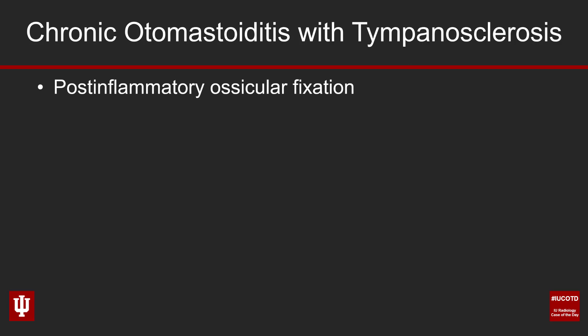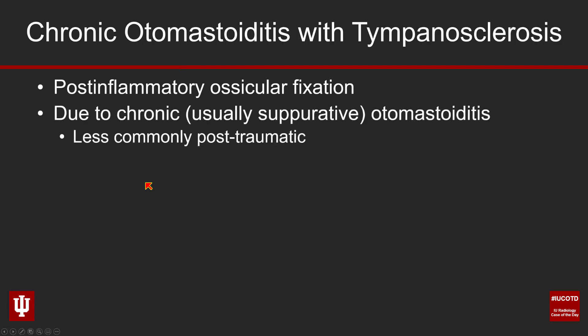This patient has chronic otomastoiditis with tympanosclerosis on the right. What is tympanosclerosis? I tend to lump all the imaging manifestations under the broad category of post-inflammatory ossicular fixation. This is due to chronic — usually suppurative — otomastoiditis that repeatedly affects the ear: it gets inflamed, it quiets down, it gets inflamed again, in a repetitive process. Less commonly, you can also see this in the setting of trauma, but much less commonly — trauma can be a setup for developing tympanosclerosis.